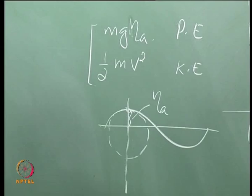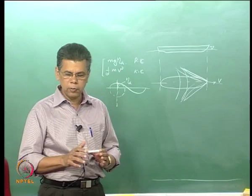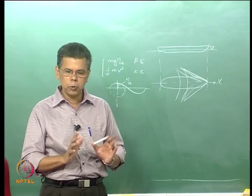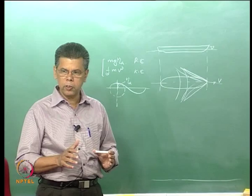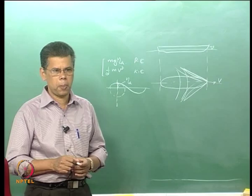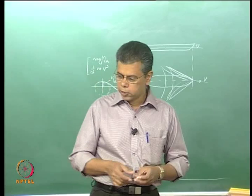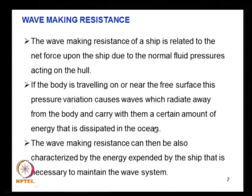When the ship moves in still water — no ocean waves considered — it generates waves. These waves possess energy, and this energy is being lost by the ship, which accounts for the wave making resistance. The wave making resistance can thus be characterized by the energy expended by the ship that is necessary to maintain the wave system.